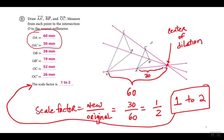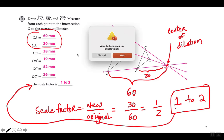Así que aquí si cojo estos dos lados correspondientes para compararlos, el factor de escala es el nuevo sobre el original — el nuevo es el que tiene el apóstrofe. Escribí el 30 arriba porque es O a A primo, y abajo el original O a A, que es 60. 30 sobre 60 cuando lo simplifico es 1 sobre 2, y se escribe 1 a 2. En la tarea le van a dar las medidas necesarias — no tienen que medir nada, simplemente encontrar el factor de escala.